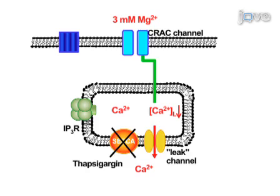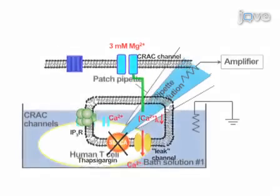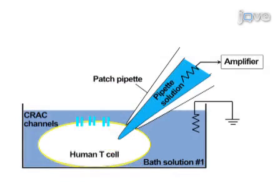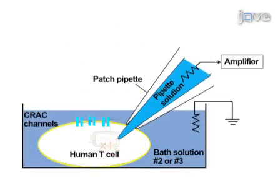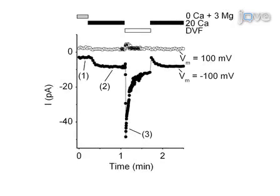Because of the poor permeability of CRAC channels to magnesium, a whole-cell voltage clamp is then established on a T cell membrane. The cell is perfused with a pipette solution containing a high concentration of the calcium chelator BAPTA. Calcium-containing or divalent cation-free extracellular solutions are then applied sequentially to activate measurable calcium and sodium currents via CRAC channels. The resulting data demonstrate the level of functional expression of CRAC channels in resting human T cells.